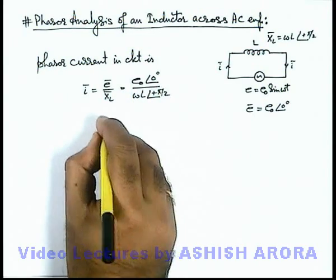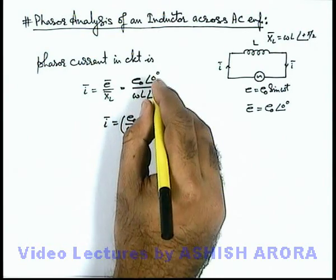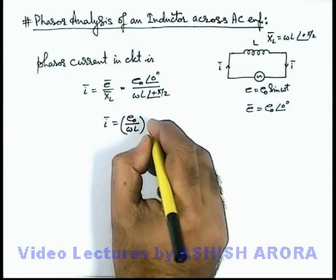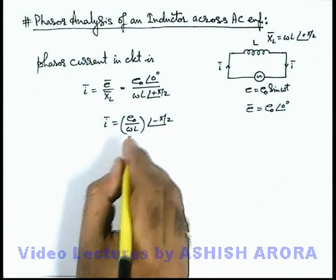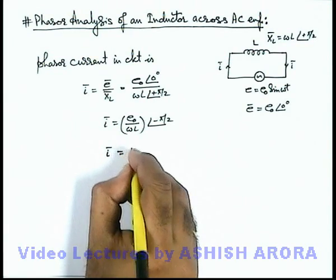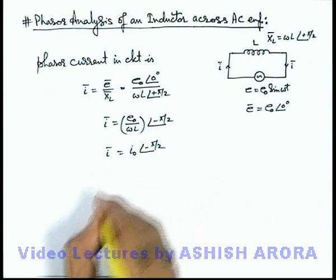Then you can see current phasor here we are getting in magnitude is E₀ by ωL, and in division it'll be zero minus π/2, so it'll be minus π/2. So E₀ by ωL we can write as peak value of current at initial phase angle minus π/2.